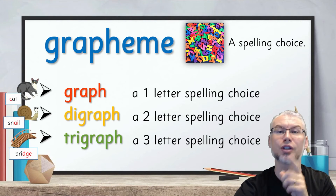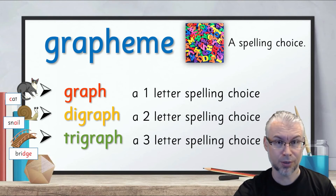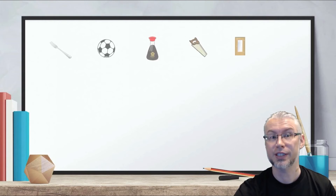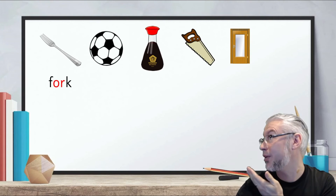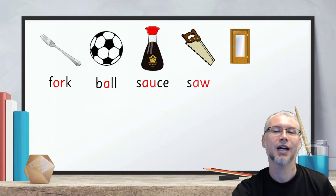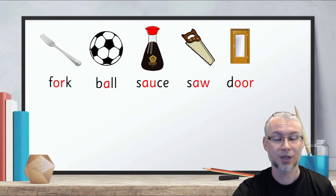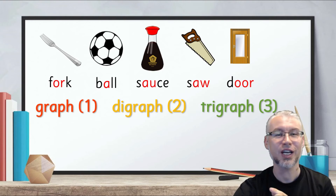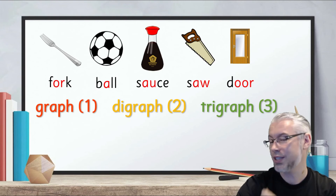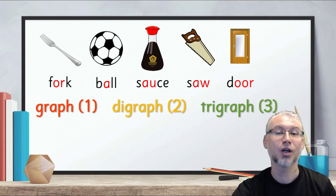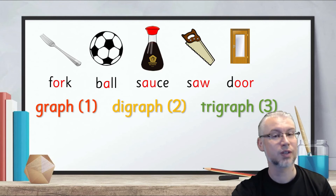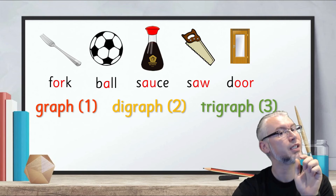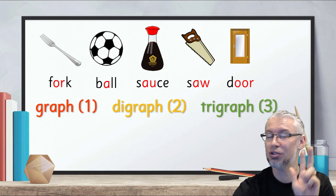Let's look at one more example on the thrust chart — a new word box. Let's look at the 'aw' box. We have a fork, we have a ball, we have sauce, we have a saw, and of course we have door, which we looked at before. So if we're looking at the different graphs, digraphs, and trigraphs in the 'aw' box, what can we see? How many graphs are there? How many digraphs are there? How many trigraphs are there?